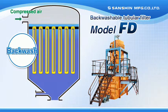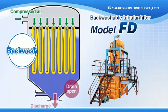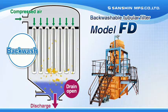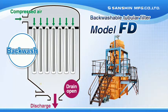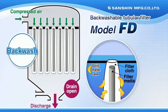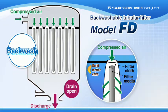By applying constant pressure with air from the filtrate side and opening a drain valve at the bottom of the filter once filtration is complete, suspended solids captured on the filter cloth surface are rinsed out with pressurized filtrate from the reverse side of the filter media and then expelled outside the system. Not only can filter media performance be restored extremely quickly, but filter media can be used repeatedly, leading to reduced waste.